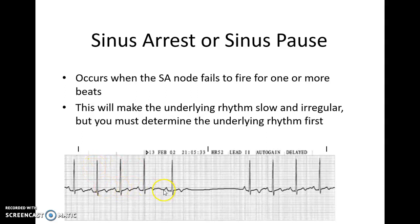I know this is sinus in origin because I have my sinus P-wave, and it looks the same and symmetrical across the strip. I'm missing at least one or two beats here. To figure out how long the pause is, I go from the R wave before the pause to the R wave after the pause, and I count how many large boxes of time I have in between.